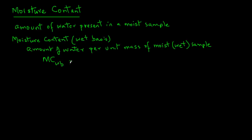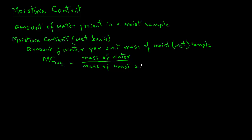Moisture content wet basis — we will use WB in the subscript — equals mass of water in the sample divided by mass of the moist sample itself. This is one of the most common ways that moisture content of a material is expressed.